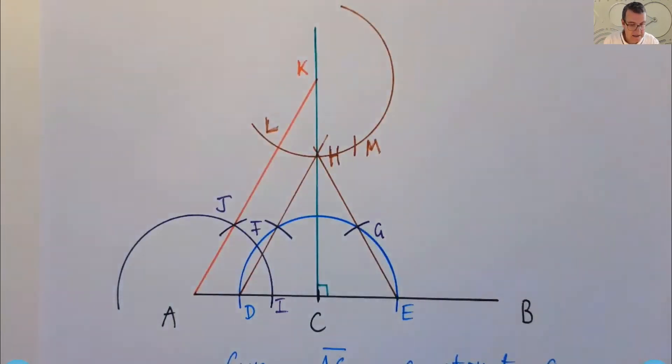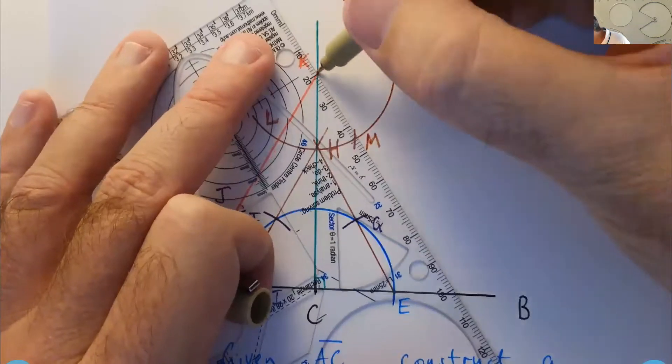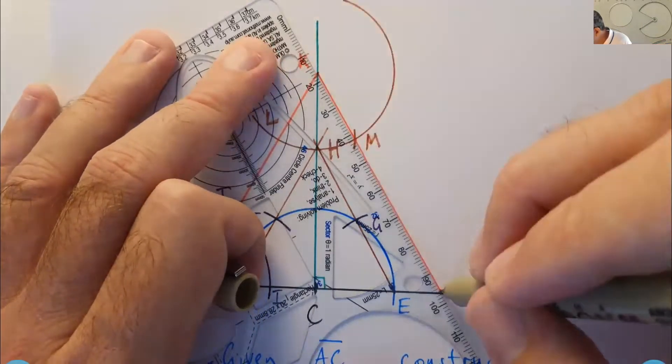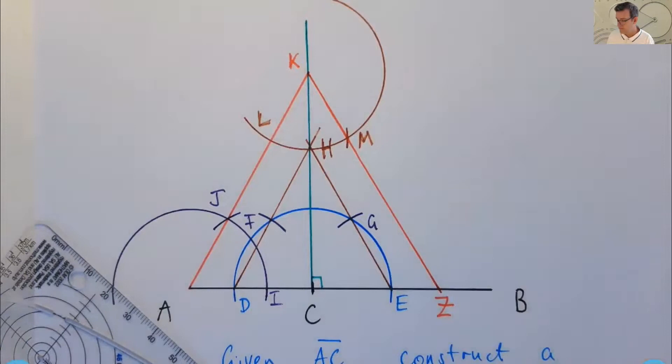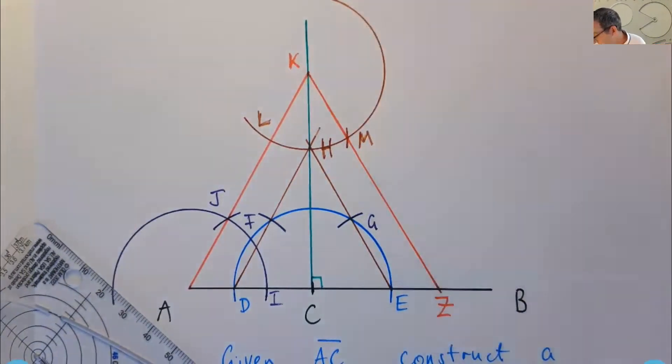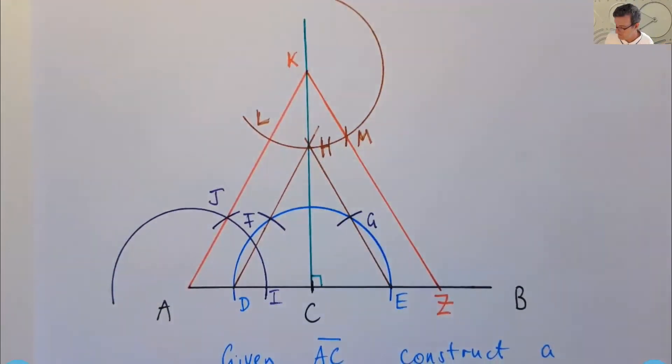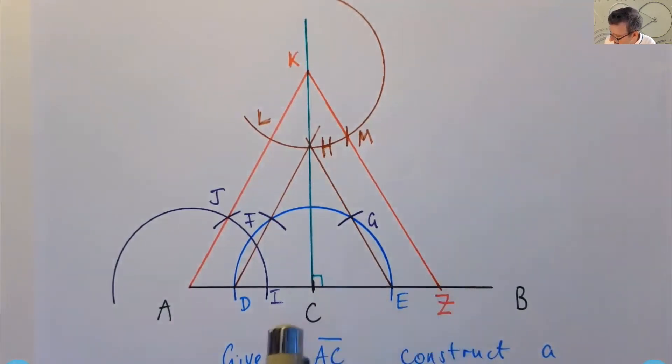Almost done now. So the very last construction is going to form the ray or the line segment, extended line segment KM. And lo and behold, we get an intersection point down here. That's going to be our Z. And you can see, KZ is actually parallel to HE. So the line segment of interest is CZ and that's claimed to be equal to CA. Well, let's measure it. Let's find out. Let's actually test it.